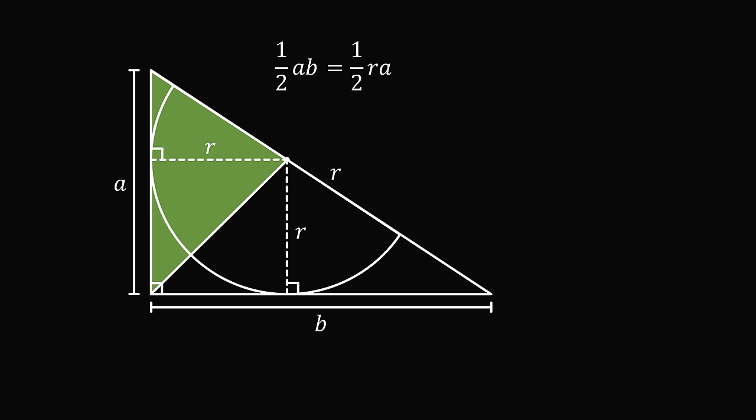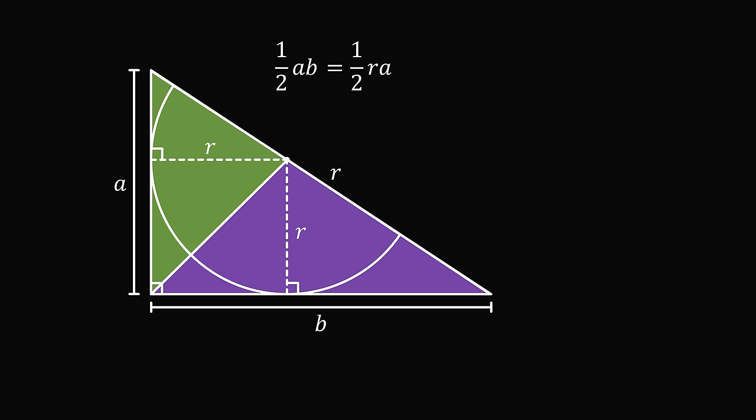Then we have another triangle here and the area of this triangle will be equal to 1 half times R times B. So we have 1 half A times B is equal to 1 half R times A plus 1 half R times B. Canceling the 1 half terms on both sides and factoring on the right hand side, we get that AB is equal to R multiplied by A plus B.